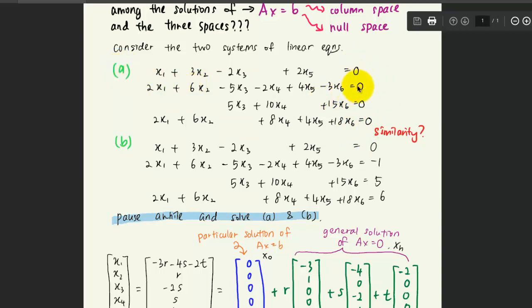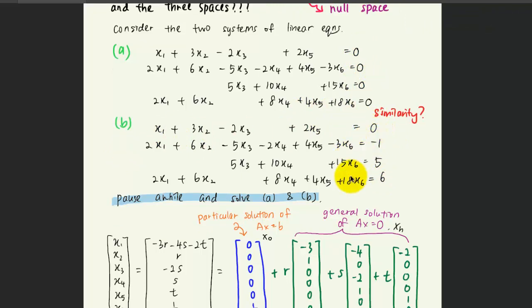we have a homogeneous linear system because the constants on the right-hand side are all zeros. And the constants on the right-hand side for the second case, case B, are not all zeros. So now I want you to pause the video and use your row operations method to solve this case, the first case and the second case, and I want you to compare the solutions of both cases.